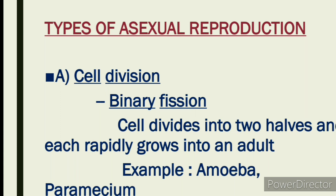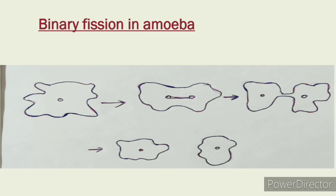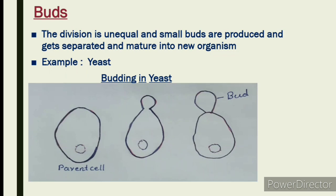When the cell divides into two halves and each half rapidly grows into another organism, it is called binary fission. Amoeba reproduces by binary fission. Look at the picture — binary fission in amoeba. First picture is one amoeba. Then the second picture shows amoeba undergoing central division. The division starts with the nucleus. In the third picture, the division in the center cell is progressing. And finally, one organism becomes two — that is binary fission.